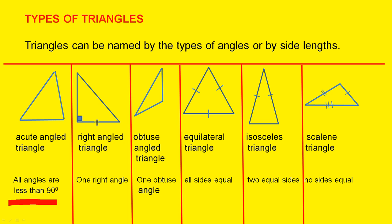This here is a right angle triangle. The reason is it has one right angle. There it is there. The next triangle is an obtuse angled triangle. It has one obtuse angle. This one here.